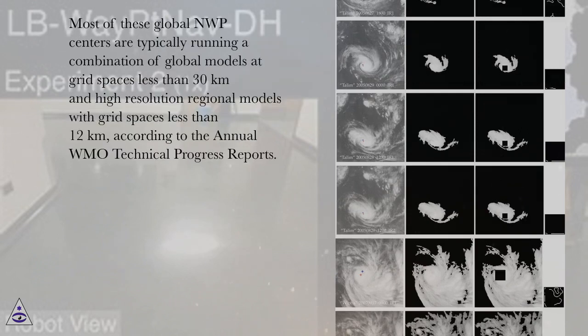Most of these global NWP centers are typically running a combination of global models at grid spaces less than 30 kilometers and high-resolution regional models with grid spaces less than 12 kilometers, according to the annual WMO Technical Progress reports.